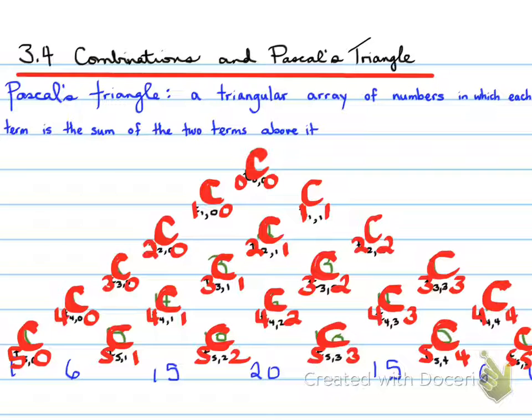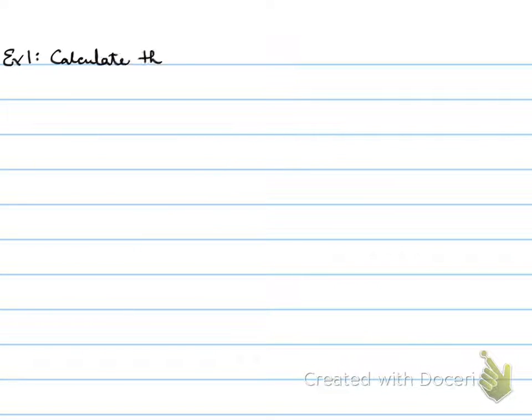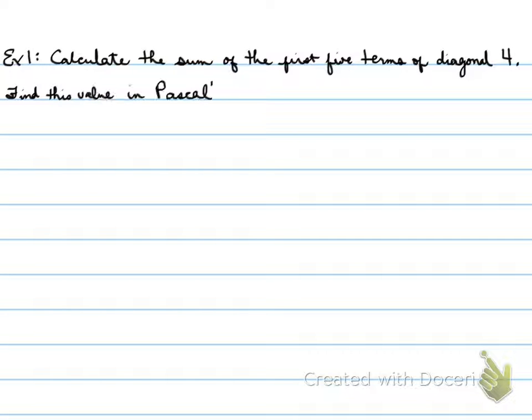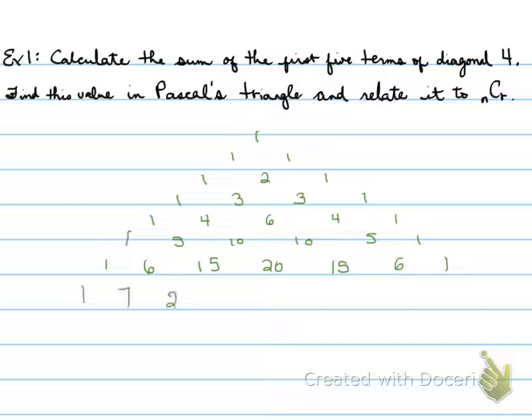We'll finish the names here. And just so that you know, we can always find whatever number we're looking for using this idea of combinations. So example 1, calculate the sum of the first five terms of the diagonal 4. Of diagonal 4, find the value in Pascal's triangle and relate it to nCr. So here is our Pascal's triangle. Here we go, folks.